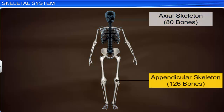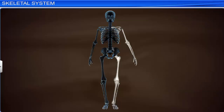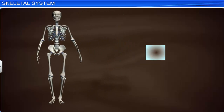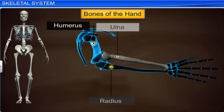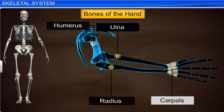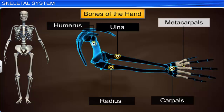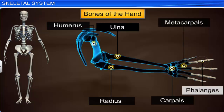The remaining 126 bones form the appendicular skeleton, which includes the bones of the limbs and their supporting girdles. Interestingly, each limb consists of 30 bones. The bones of the forelimb or hand include the humerus, radius, and ulna, 8 carpals or wrist bones, 5 metacarpals or palm bones, and 14 phalanges.